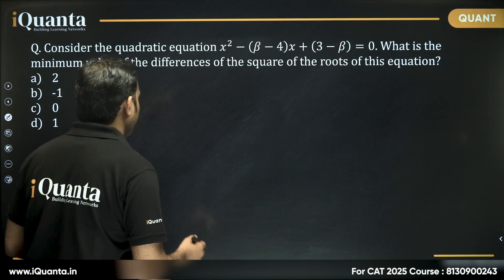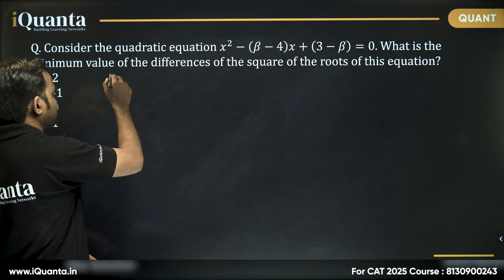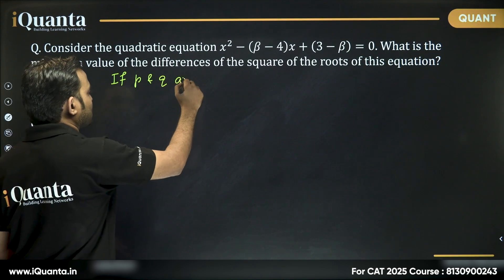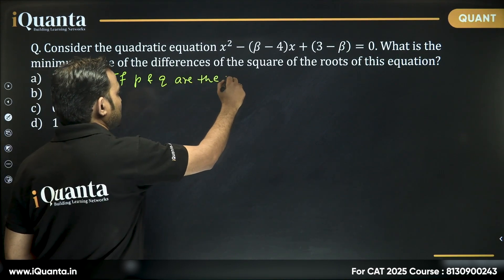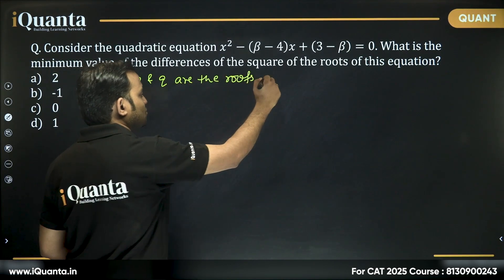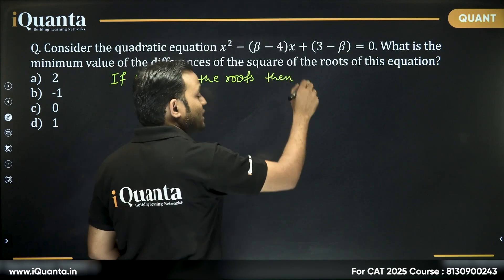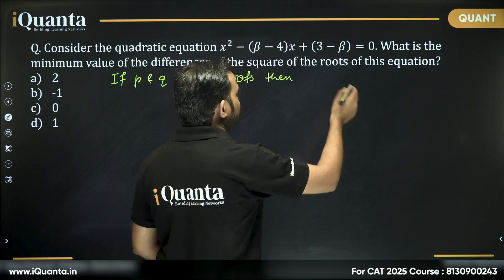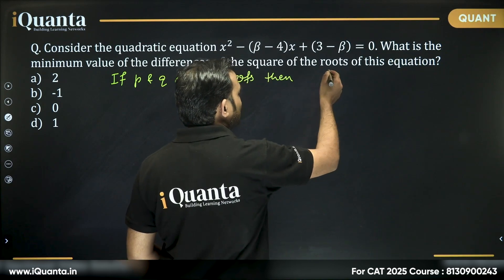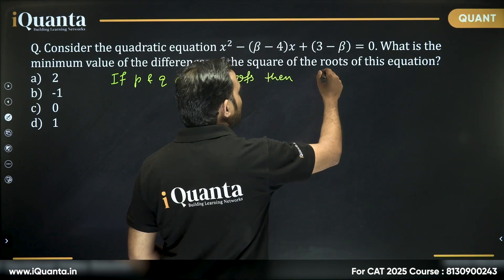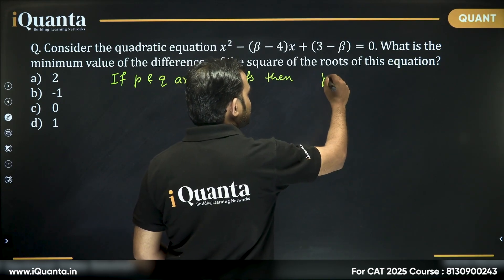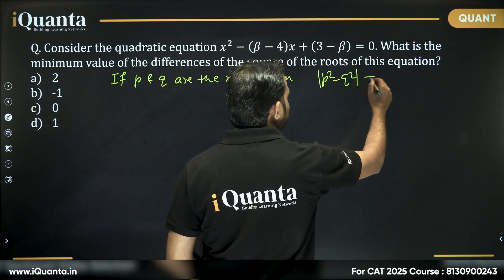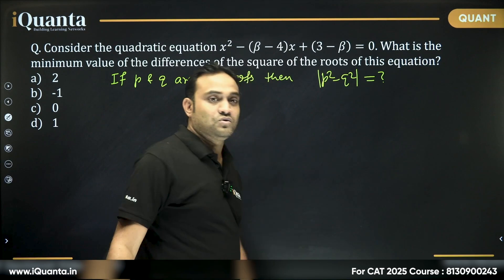What we need to find is: if p and q are the roots, we need to find the minimum difference between the squares of the roots, which is |p² minus q²|.